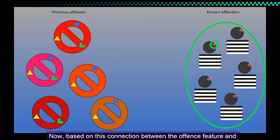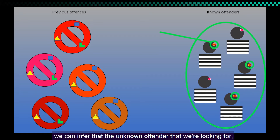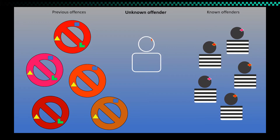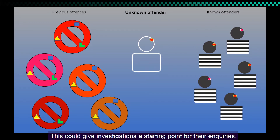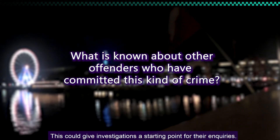Now, based on this connection between the offense feature and the perpetrator feature, we can infer that the unknown offender we're looking for has some of these same features in common with other perpetrators. This could give investigations a starting point for their inquiries.